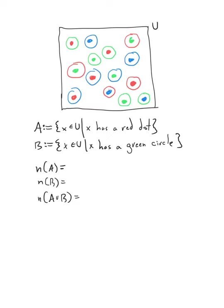So imagine we have the following universe. The objects in our universe are dots with circles around them. Dots can be either red, green, or blue, and the circles can be either red, green, or blue as well.